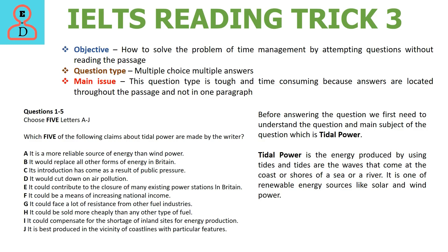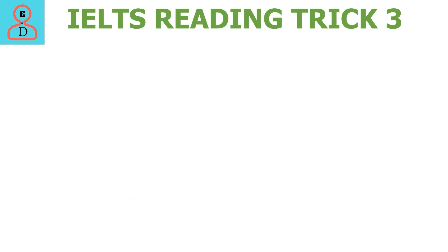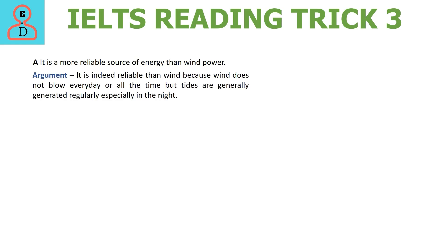We will analyze each option and try to figure out the answers. Option A says Tidal Power is more reliable than wind energy. We all know that nobody can predict when and how strong the wind will blow, but tides generally have a pattern, especially at night. So this option sounds to be true as per general information about tidal and wind power. Mark a tick here, indicating that we believe it is true for tidal power.